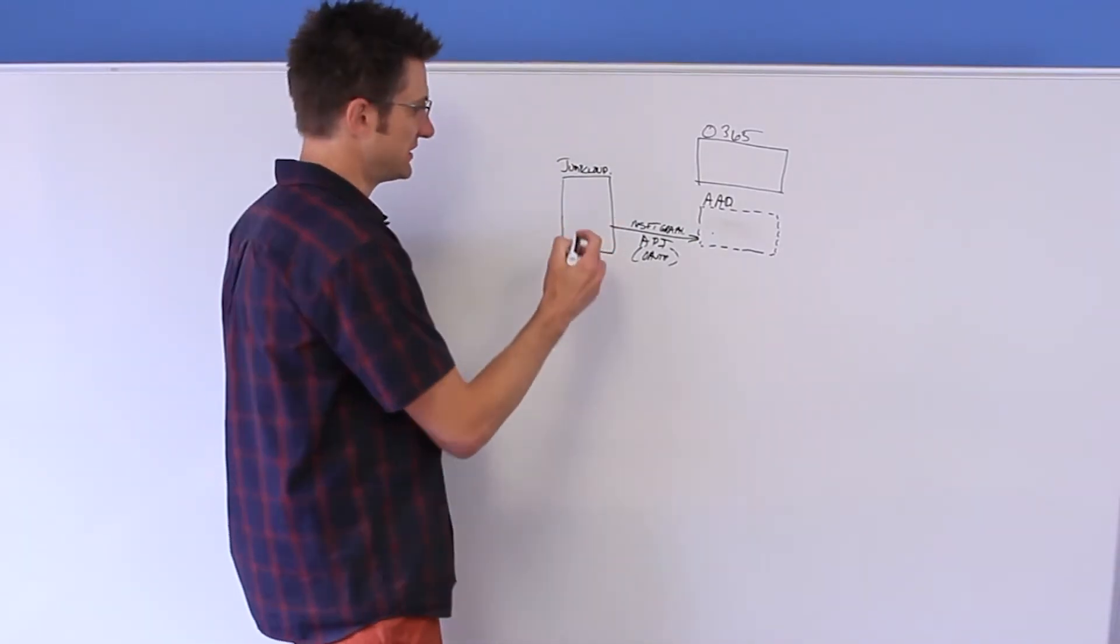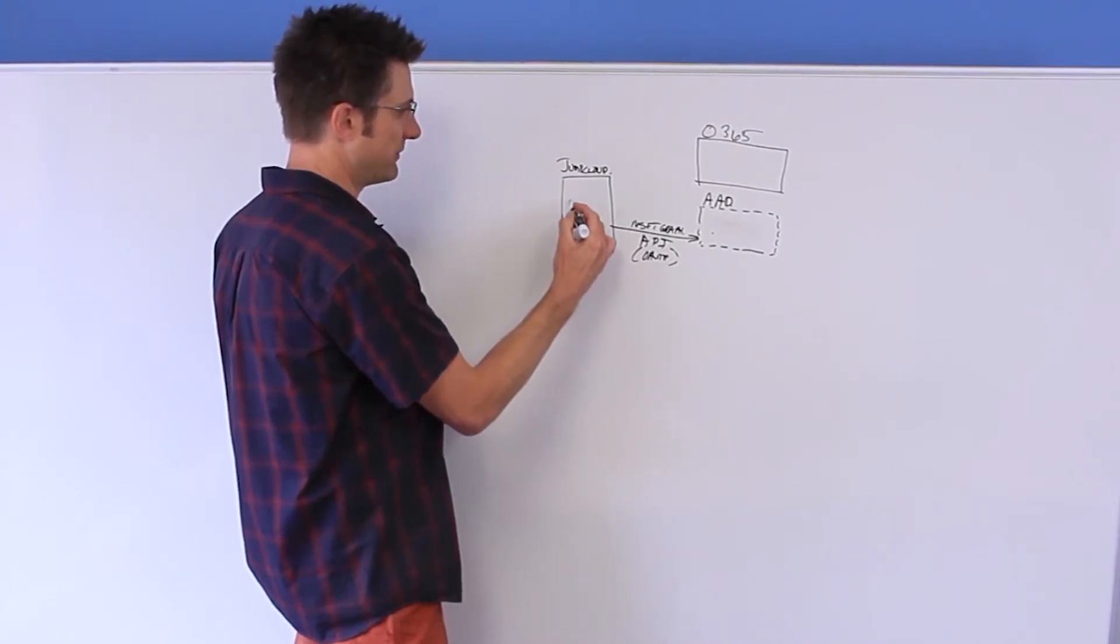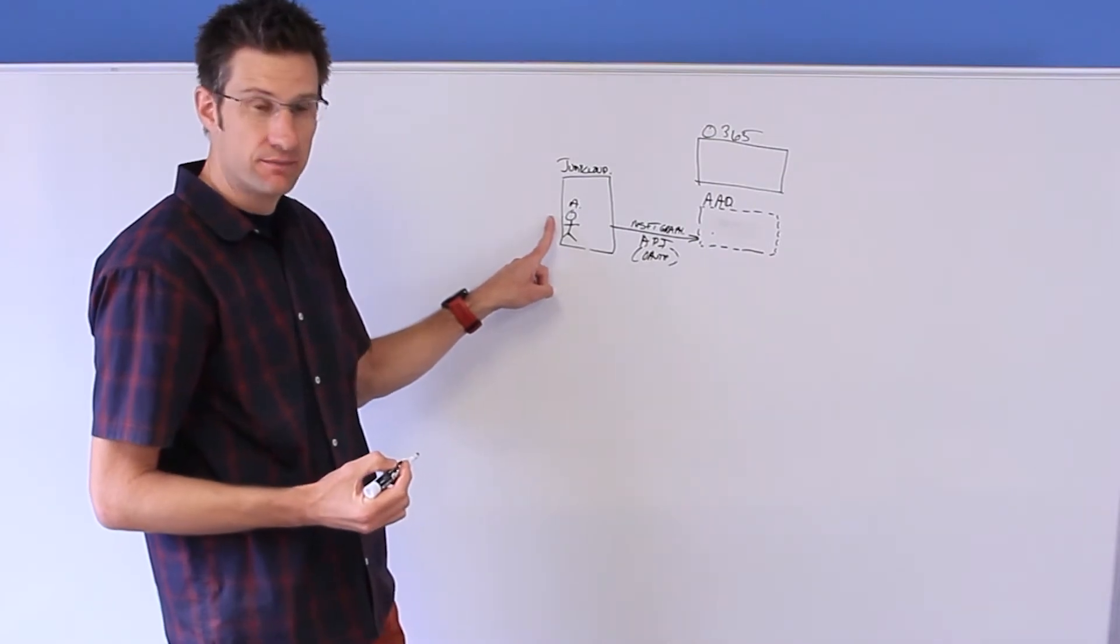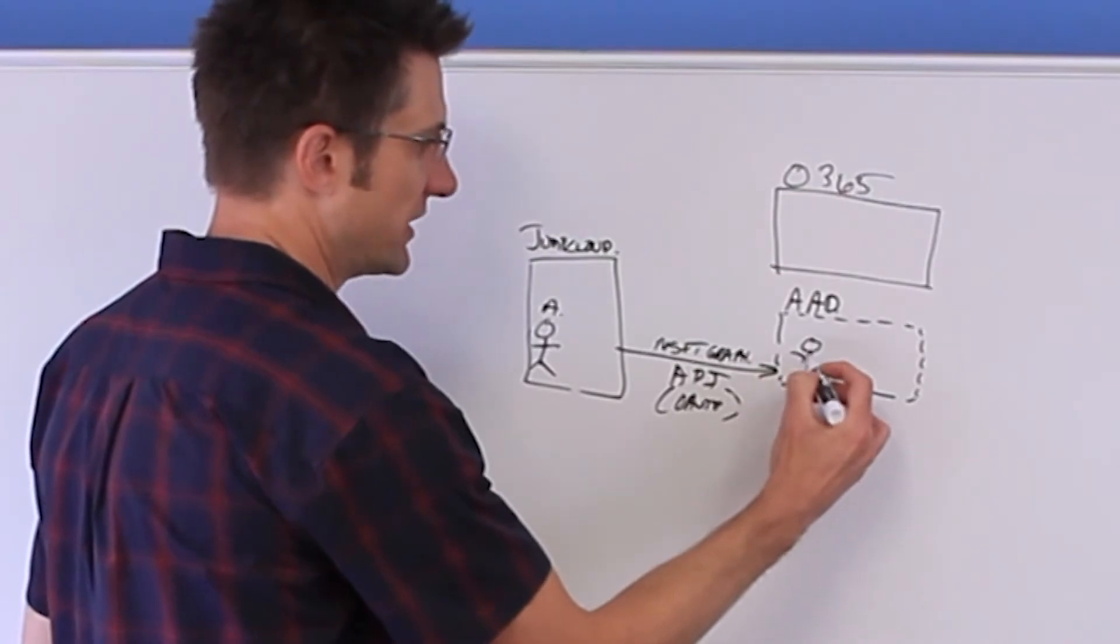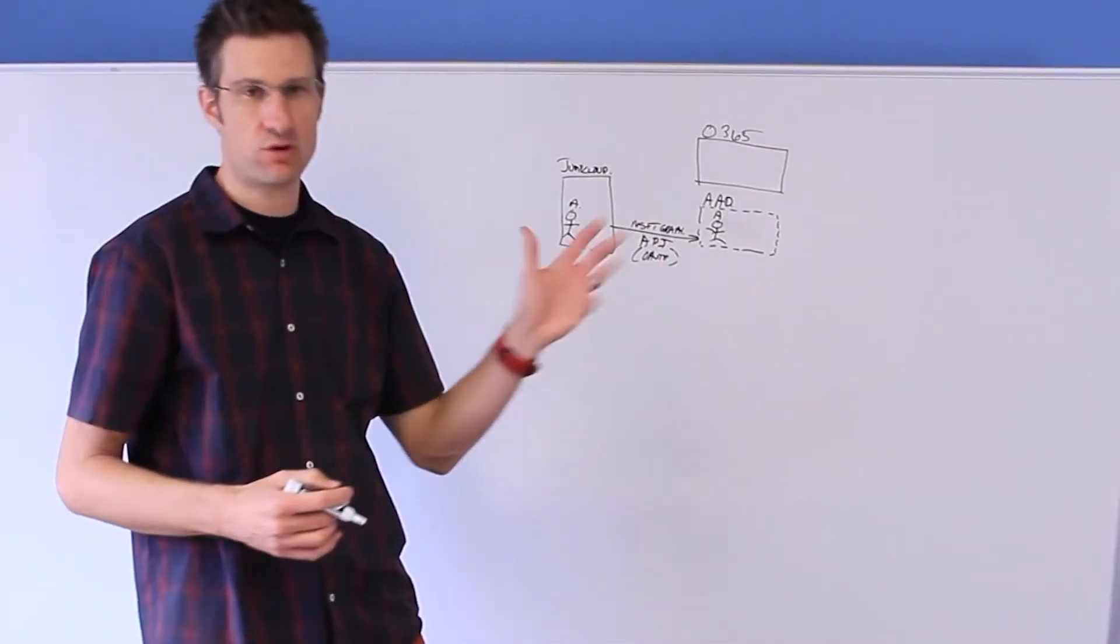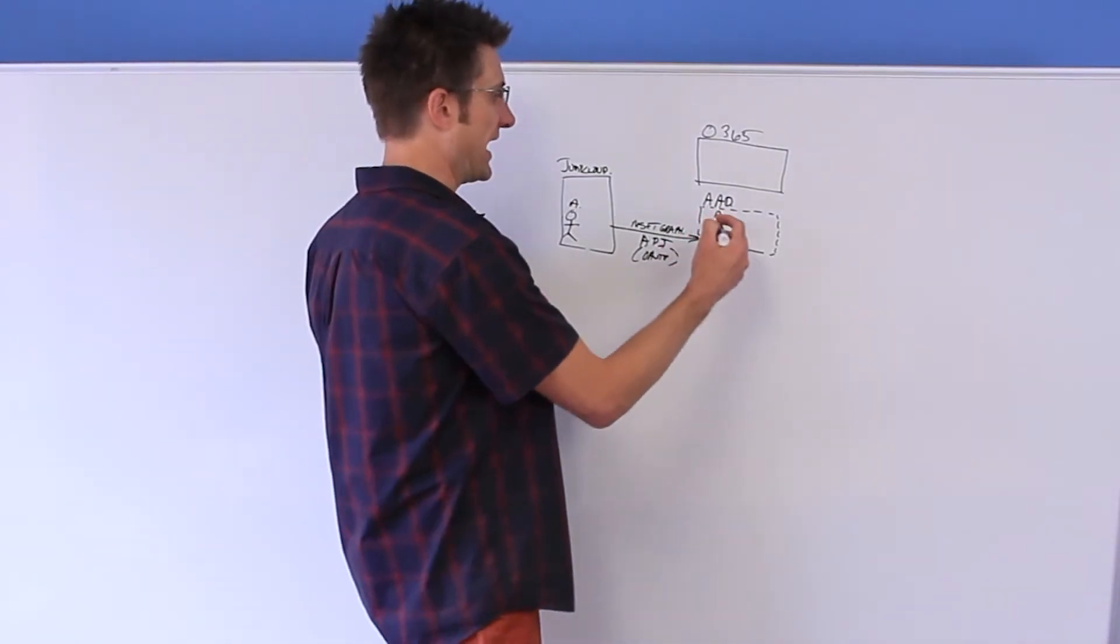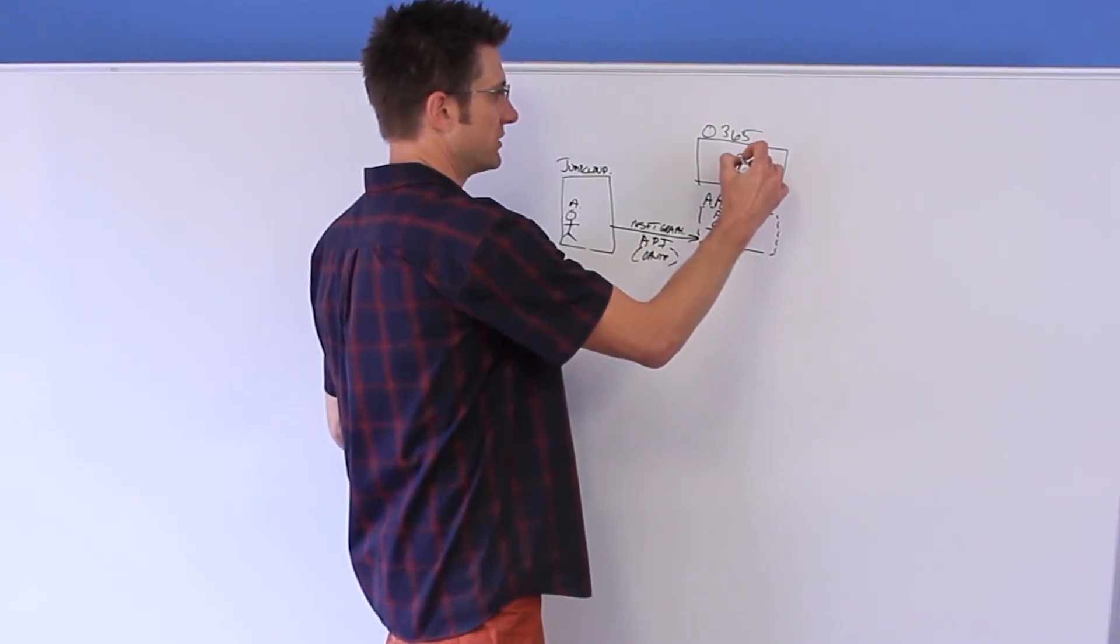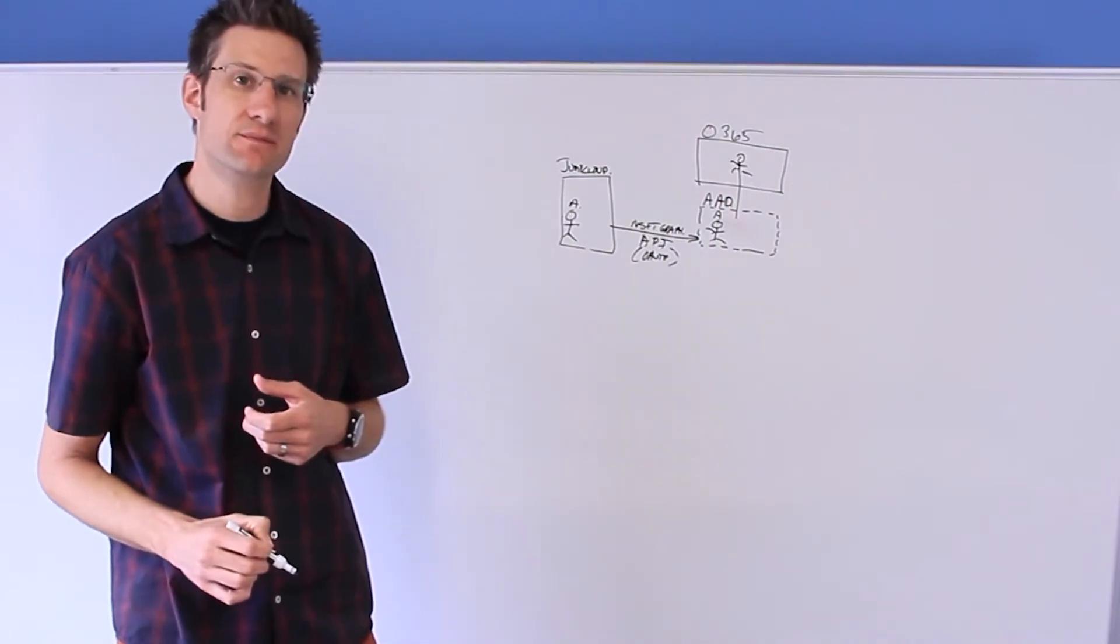In the first instance, we have a provisioning mechanism. So if I have a user here, for example, called user A within JumpCloud, and I push this user with our integration bridge, Azure Active Directory will, of course, naturally create and inhabit or incorporate user A. And by virtue of that, we then surface that user into Office 365.